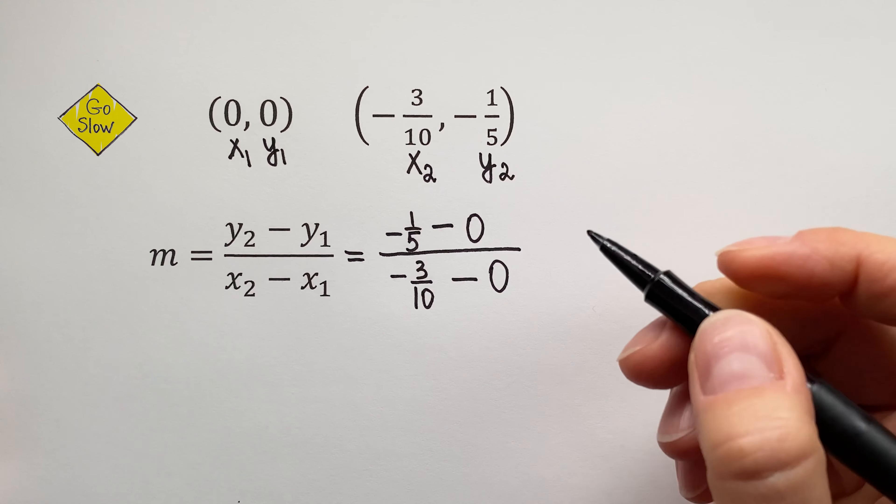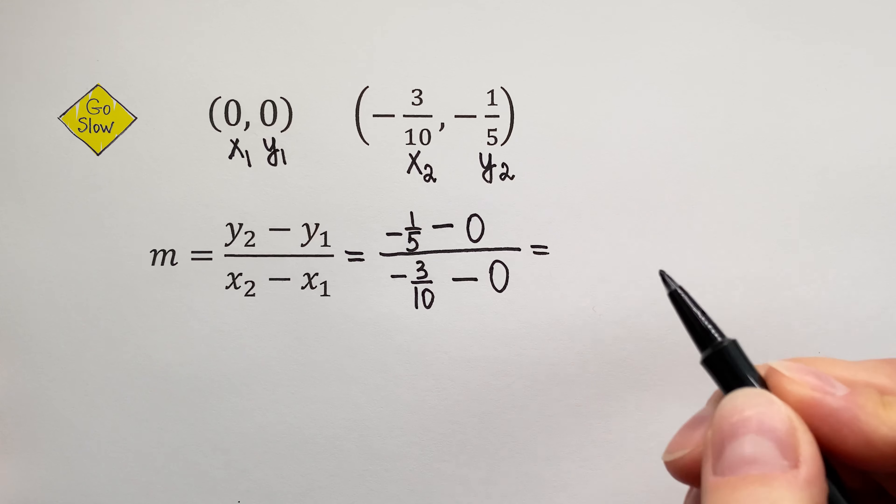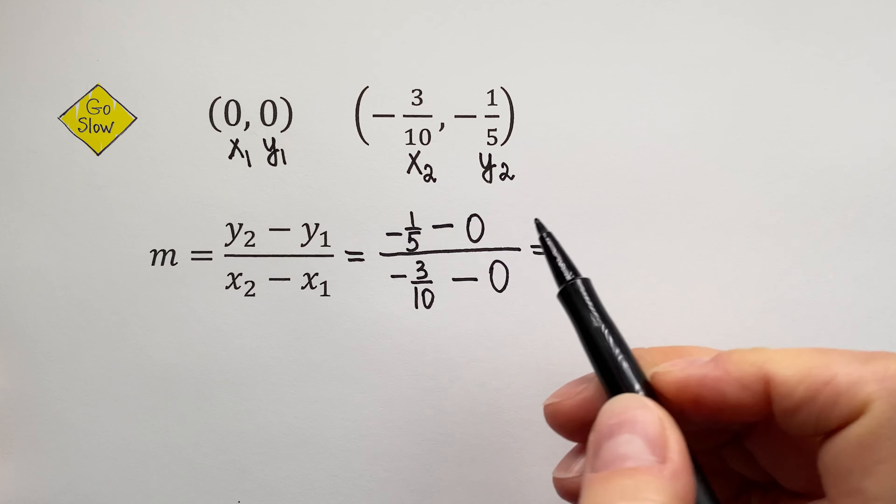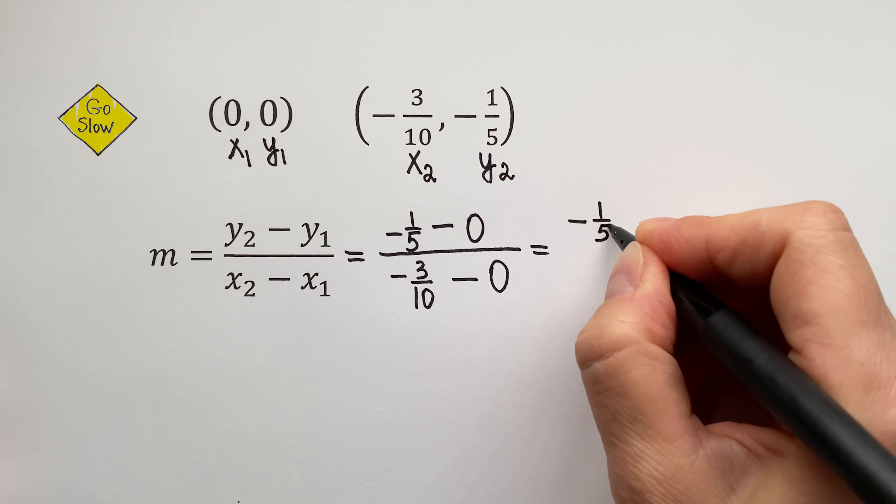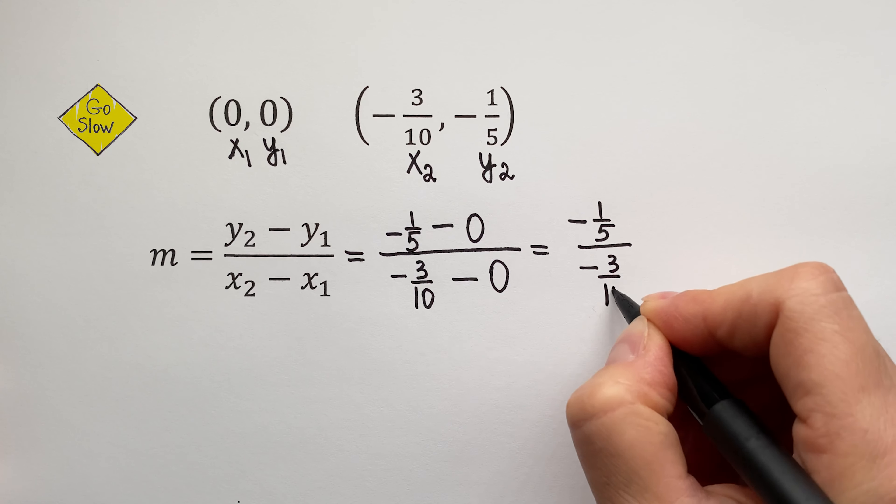Oh, I love zeros here! Let's smile! You look good! All right, let's calculate. Negative 1 fifth minus 0 is negative 1 fifth. Over negative 3 tenths minus 0 is negative 3 tenths. Very good!